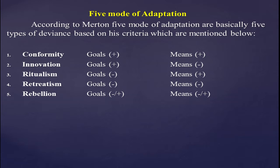Conformity people have the cultural goals — the American dreams — and they are achieving them through legitimate and legal means. For the remaining four modes, you will find differences in how goals and means are combined.